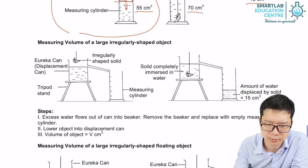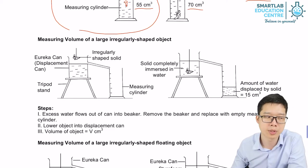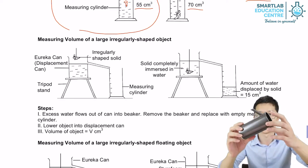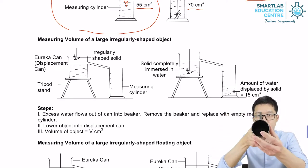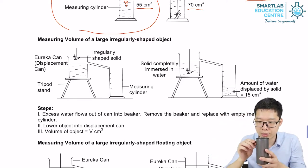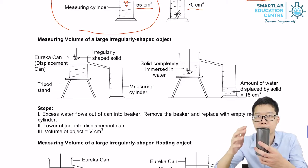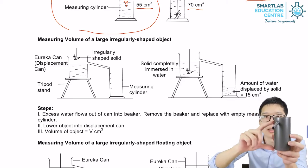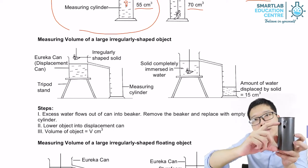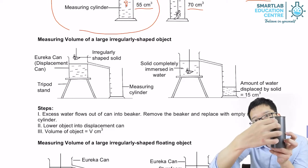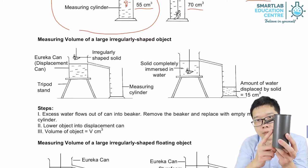So another way of measuring irregular shape, we can use a Eureka can, which is this one. So you can pour water inside until the maximum level. Because the design of this one, it can only have a certain height. If you pour more water inside, it will automatically flow out from this small tube.